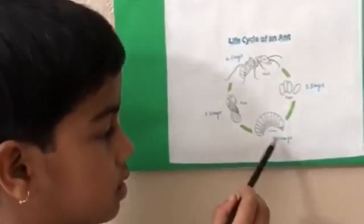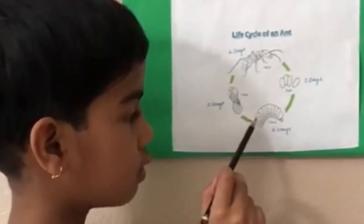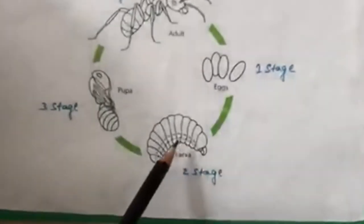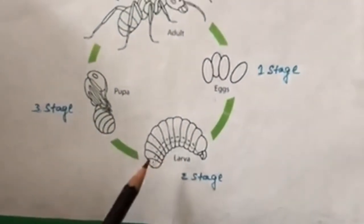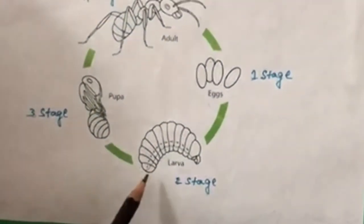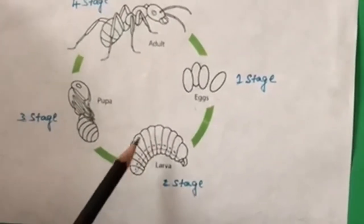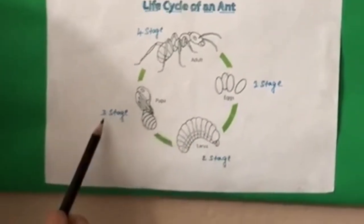Second stage is larva. The larva looks like a worm that doesn't have eyes and legs. They eat the food that is provided by the adult ants.